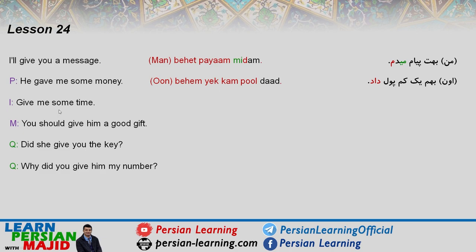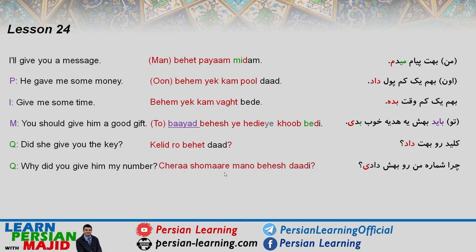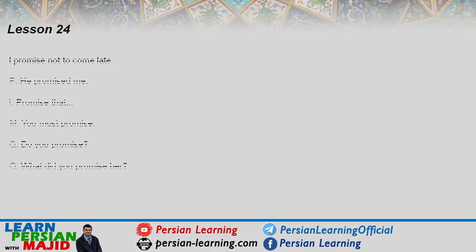'Give me some time' — again using YEKKAM — BEHEM or BE MAN YEKKAM VAKT BEDE (imperative). 'You should give him a good gift' — BEHESH or BE AUN YEH HEDIYEH خوب BEDE. HEDIYEH means gift. 'Did she give you the key?' — KELIDO BEHET DAD? 'Why did you give him my number?' — CERA SHUMARAYE MANO BEHESH DADI?